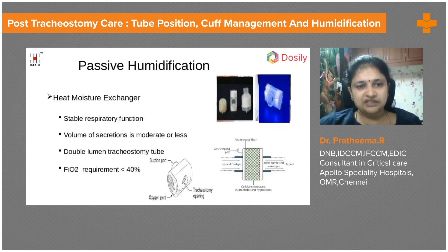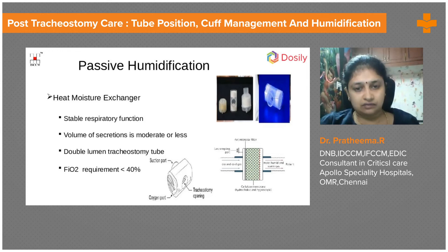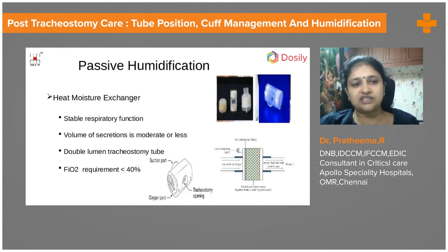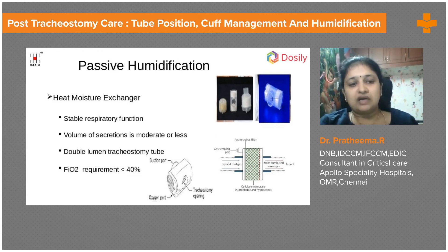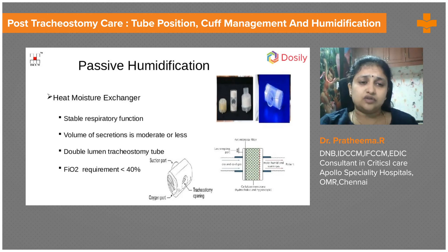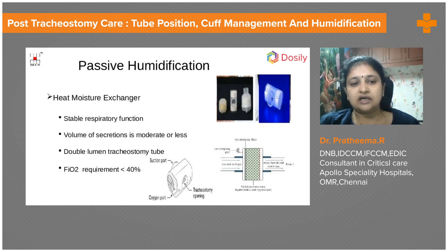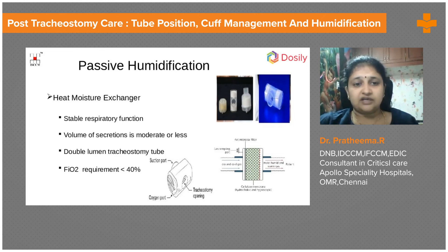Passive humidification uses a Heat Moisture Exchanger — the HME filter — which contains a filter, a viral filter, and allows air to pass through. It is passive because it absorbs heat and moisture from the patient's exhaled air and then moistens the next inspiratory breath coming in. This can be used in patients who do not have excessive secretions and do not require frequent suctioning; heavy secretions may cause the filter to clog, risking desaturation.